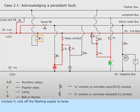Contact F sub 1 cuts off the flashing supply to lamp. Contact B sub 4 resets and establishes steady visual indication via contact A sub 3. The lamp indication continues.